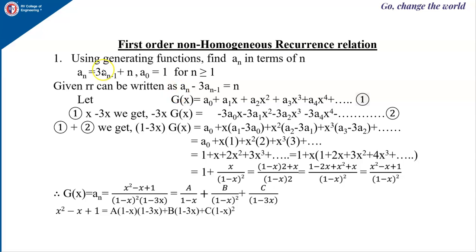This recurrence relation can be rewritten as aₙ − 3aₙ₋₁ = n by bringing 3aₙ₋₁ to the left-hand side. Let us consider the general generating function G(x) = a₀ + a₁x + a₂x² + ··· — call this equation 1. Now, multiply equation 1 by −3x, where −3 is the coefficient of the lower term. So −3x·G(x) = −3a₀x − 3a₁x² − 3a₂x³ − ··· — call this equation 2.